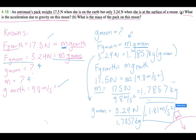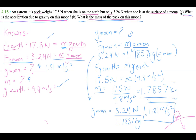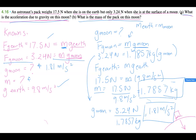The acceleration due to gravity on this moon is 1.81 meters per second squared. For part b, mass is always the same everywhere — mass is absolute — so the mass of the pack on the moon equals the mass we calculated, which is 1.7857 kilograms.